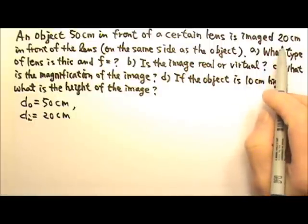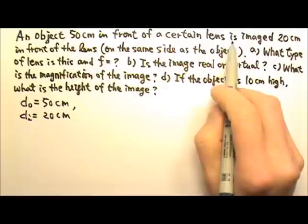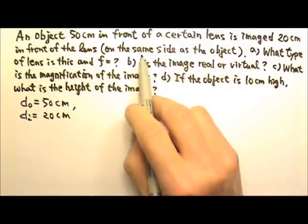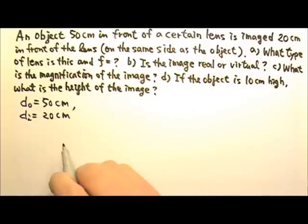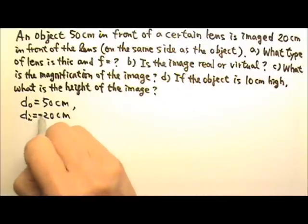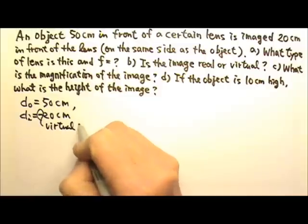But the image is on the same side as the object. Since the lens lets light go through, if the image is on the same side as the object, it must be a virtual image. So the DI has to be negative because it is a virtual image, which means that's the answer for B.